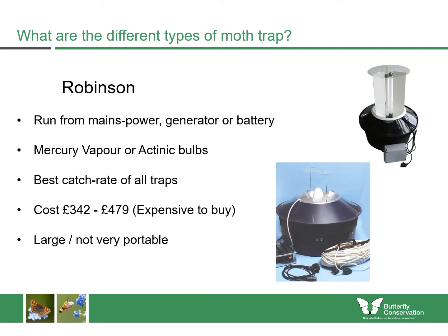The first trap I'm going to talk about is the Robinson trap. This is a large round trap with a collar, funnel, and light. The collar is often clear, which allows you to see some of the moths before you even open it up. The Robinson trap can be run off the mains or from a generator if you're using a mercury vapour bulb. If you're using an actinic bulb you could run it off a battery. The majority of Robinson traps use mercury vapour bulbs, although the one I have uses two 30-watt actinic bulbs and works very well.